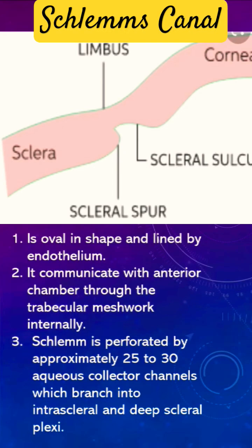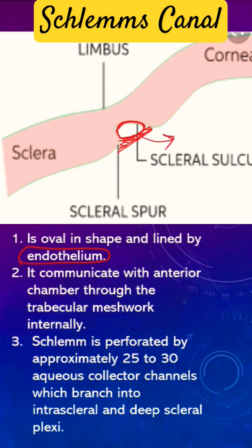Schlemm's canal is oval in shape. The important thing about this canal is that it is lined by endothelium. This is the trabecular meshwork, which communicates with it, converting it into the canal. This canal is lined by endothelium and can communicate with the anterior chamber through the trabecular meshwork internally. However, externally, this canal is perforated by about 25 to 30 aqueous collector channels.